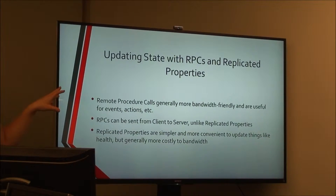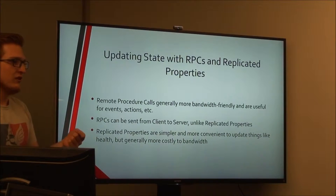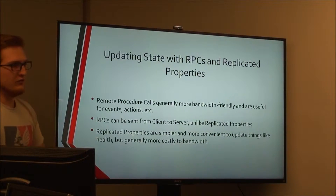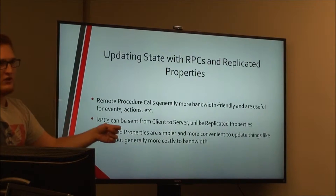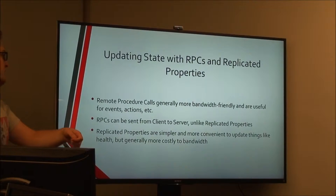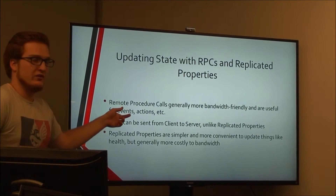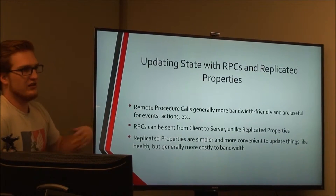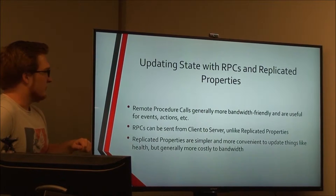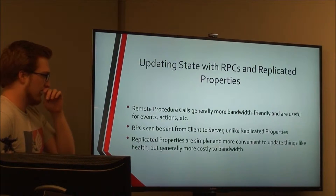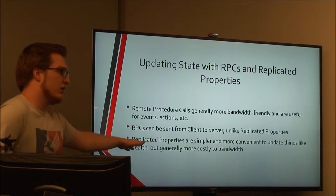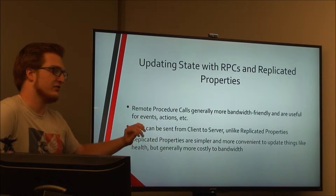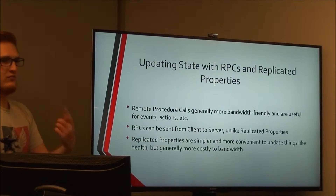In terms of updating state of different actors, there are two important concepts: RPCs and replicated properties. With RPCs, you call a function in one executable, Unreal serializes that call, sends it to another client or the server, deserializes it, determines what function you wanted to call, and calls that same function remotely. They are less bandwidth-intensive and very good for events. Replicated properties — for example, health — you mark them as replicated and they just replicate. It's really cool, but it uses a lot of bandwidth because every single frame it's replicating them.